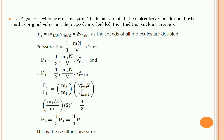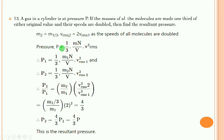Problem 13: A gas in a cylinder is at pressure P. If the mass of all molecules is made one-third of the original value and their speeds are doubled, find the resultant pressure. Given: m2 = m1/3, and v_rms2 = 2 × v_rms1. We use the pressure formula from derivation: P = (1/3)(Nm/V) × v_rms squared.